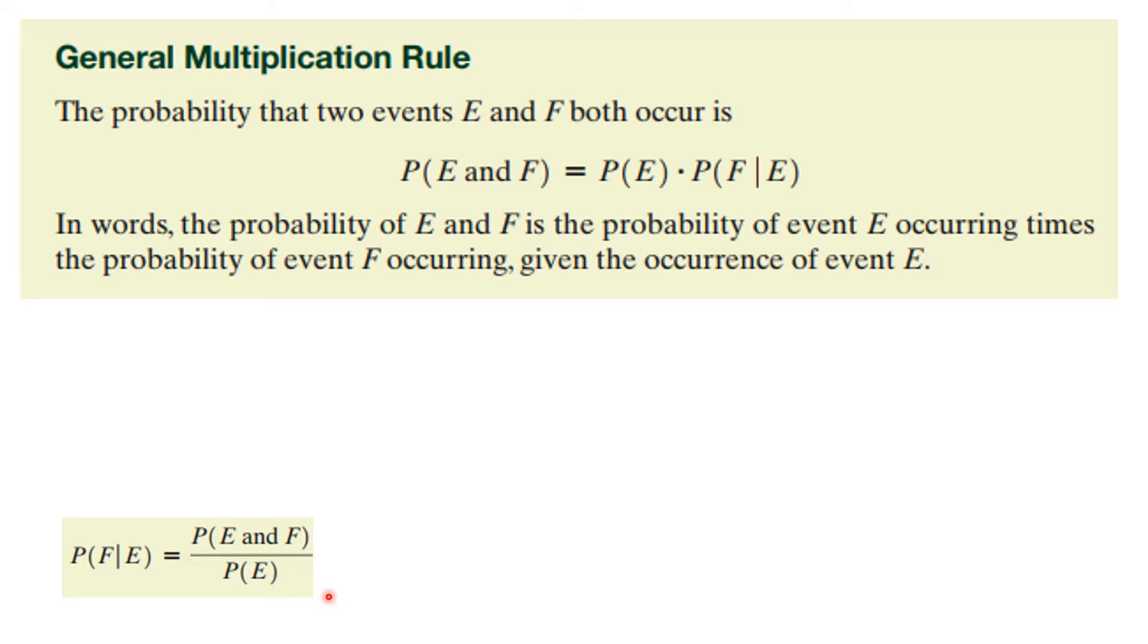And now, since we do have a definition that the probability of F given E is equal to the probability of E and F divided by the probability of E, if I multiply both sides by the probability of E, it cancels out on this side. So I have the probability of E and F is equal to the probability of F given E times the probability of E. And you see, this is different than what we had before, because before we had a multiplication rule that said if events E and F were independent, you would just multiply the probability of E times the probability of F.